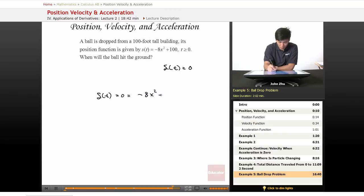All we have to do is set this position function equals zero: negative 8x squared plus 100. So negative 8t squared plus 100. Solving for t, we get t equals positive and negative square root of 100 over 8.